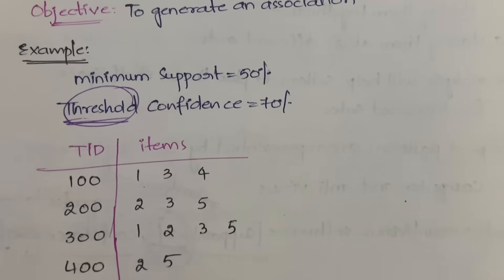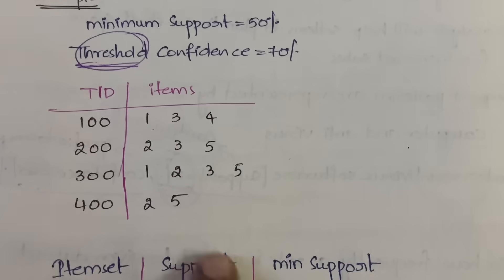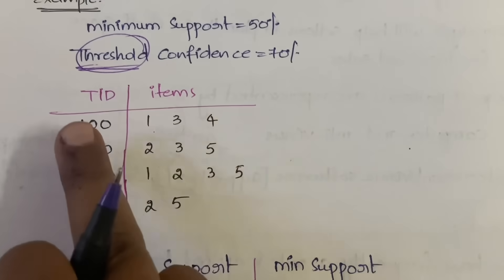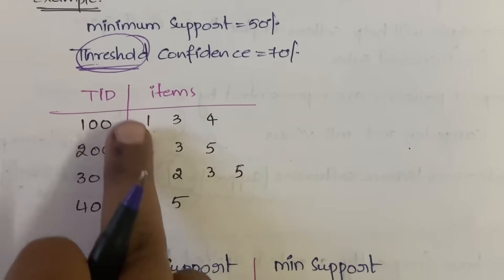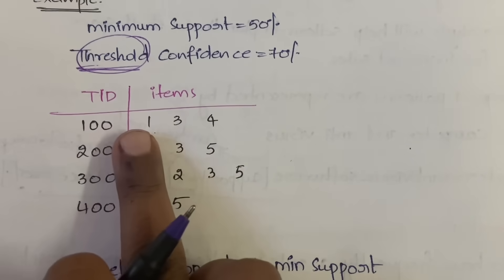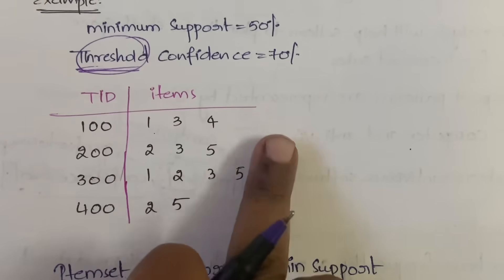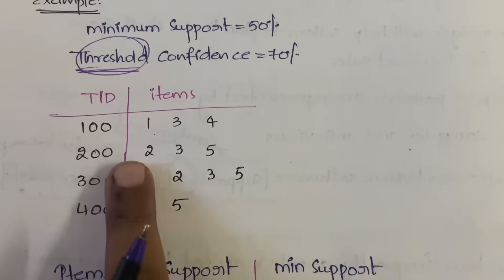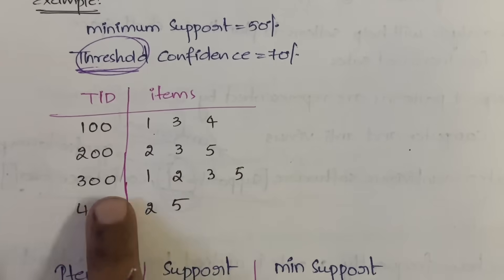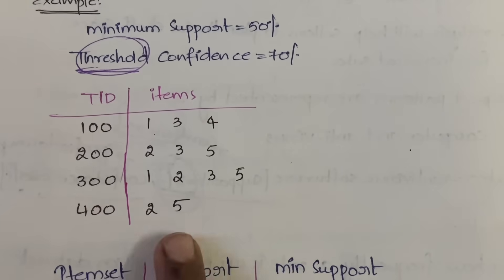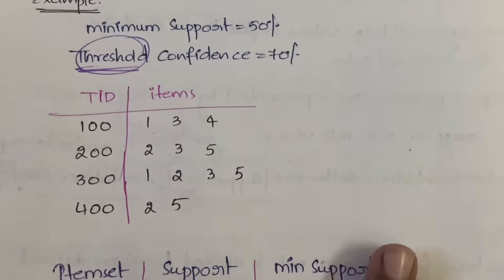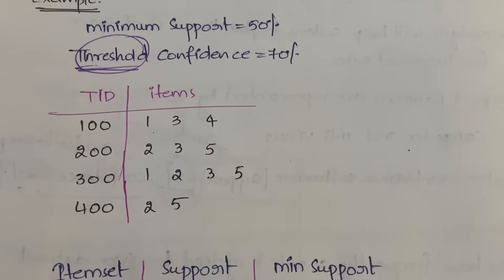Here is our example. We have a transaction table with TID (Transaction ID) and items. TID 100 has items {1,3,4}; TID 200 has {2,3,5}; TID 300 has {1,2,3,5}; TID 400 has {2,5}. This is our example, and now we start applying the Apriori algorithm.